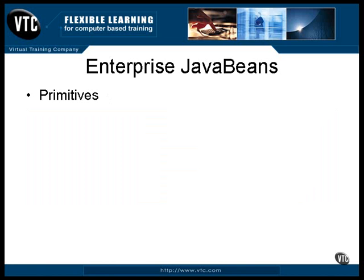Any of the primitive data types — int, float, short, and so on — can be transmitted because any one of these can be marshaled into a form that can be recognized by the receiver. These are easy. Any Java object can be sent if that object implements the serializable interface. Most of them do, so this is seldom a problem. If you find yourself trying to send an object that is not serializable, you usually have a special situation and can usually work around that easily enough.